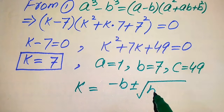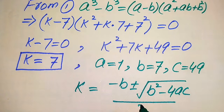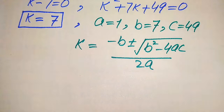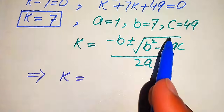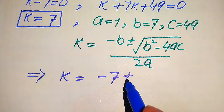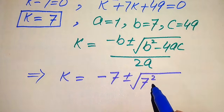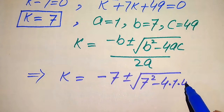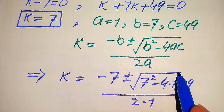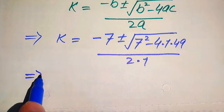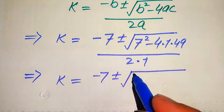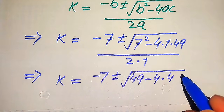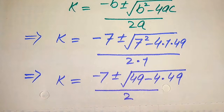The quadratic formula is k equals minus b plus or minus square root of b squared minus 4ac, divided by 2a. Substituting a equals 1, b equals 7, and c equals 49, we get k equals minus 7 plus or minus square root of 7 squared minus 4 times 1 times 49, divided by 2 times 1. Simplifying: minus 7 plus or minus square root of 49 minus 196, divided by 2.